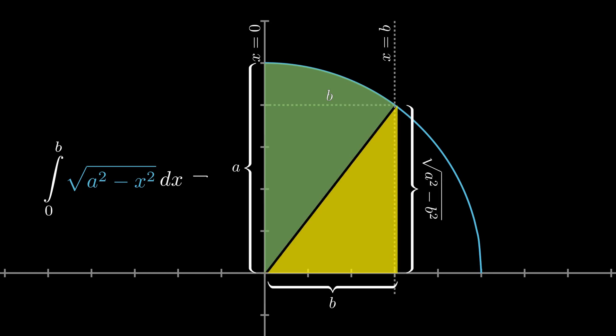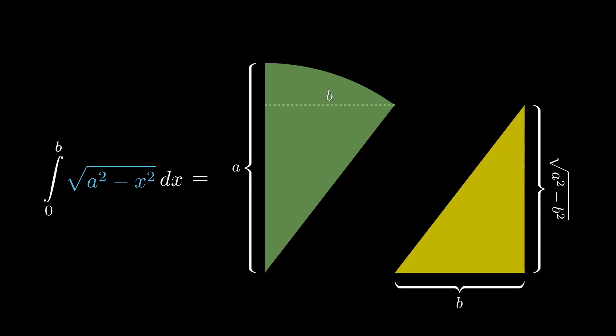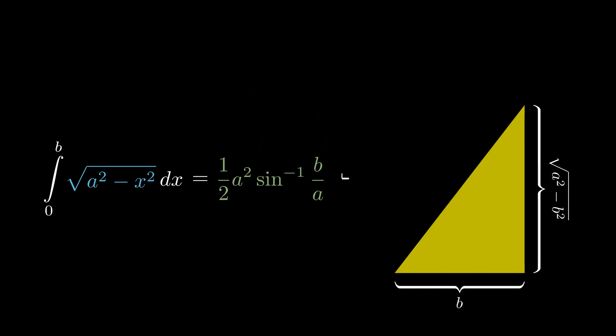The sector has radius a and angle sin inverse of b by a. This gives the area of the sector to be a squared by 2 times sin inverse of b by a.